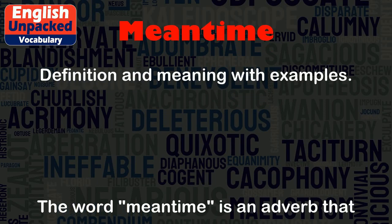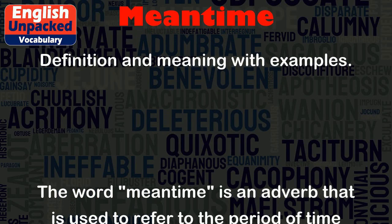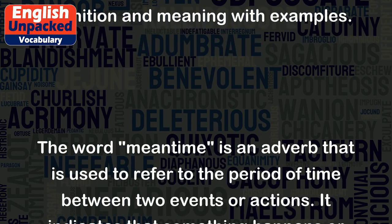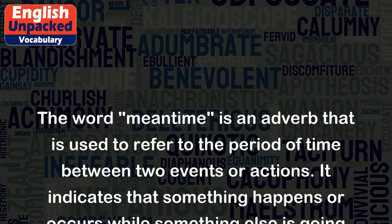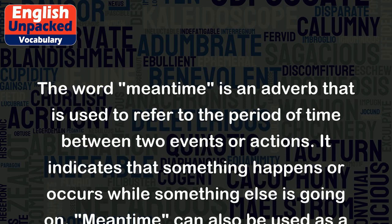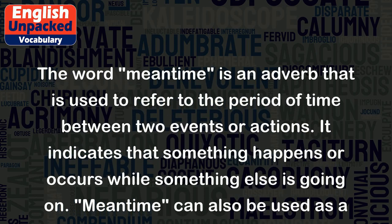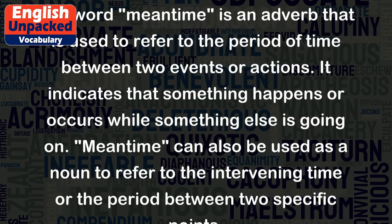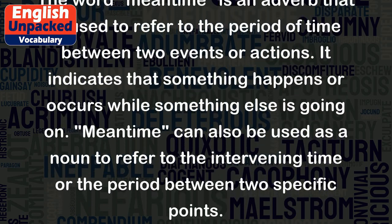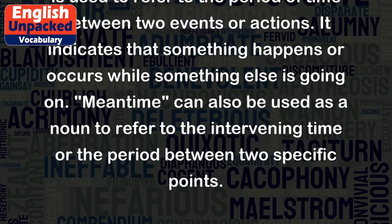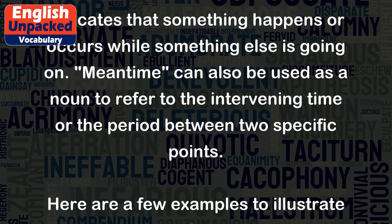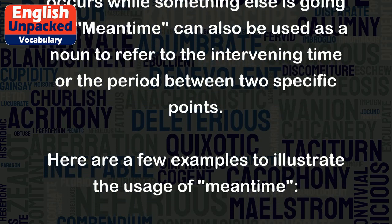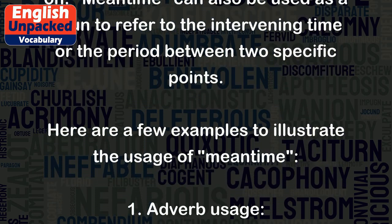Meantime. The word 'meantime' is an adverb that is used to refer to the period of time between two events or actions. It indicates that something happens or occurs while something else is going on. Meantime can also be used as a noun to refer to the intervening time or the period between two specific points.